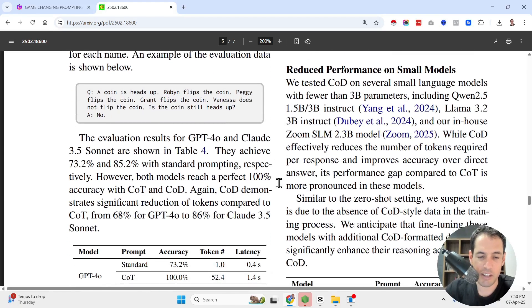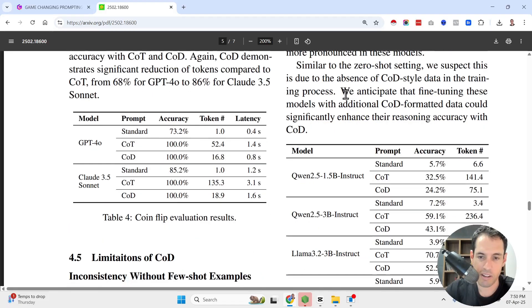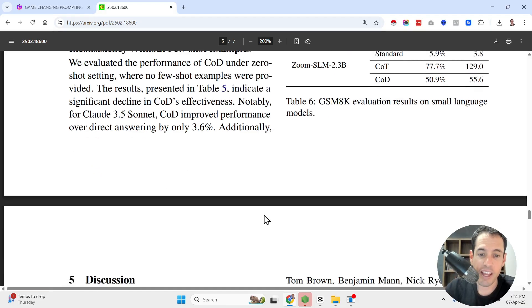Now, there are some limitations when it comes to using chain of draft. They notice that when using smaller models, they don't work as well. And they notice also inconsistencies without few-shot examples. So, the chain of draft seems to be needing few-shot examples and probably it seems like it should work with frontier models and not small models.